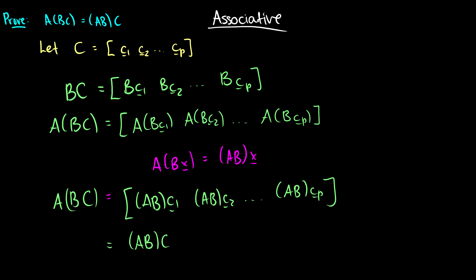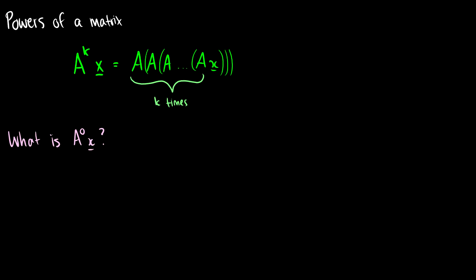Let's quickly touch on powers of a matrix. Sometimes you want to perform the same matrix multiplication over and over again — these are called the powers of a matrix. Just like 3 to the 4th means 3 times 3 times 3 times 3, with matrices A to the k means you multiply the matrix k times. So A^k times x is just multiplying the vector x by A, k times.